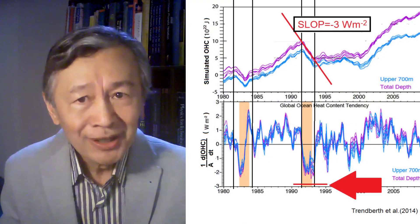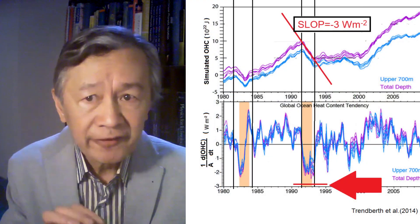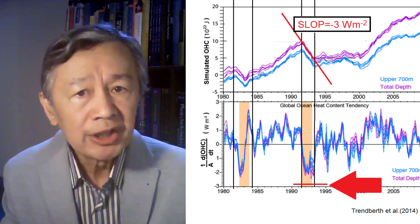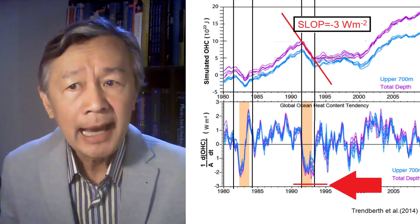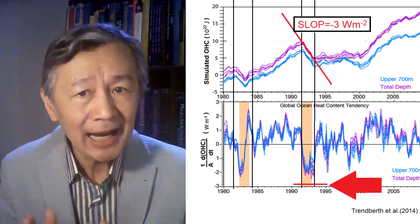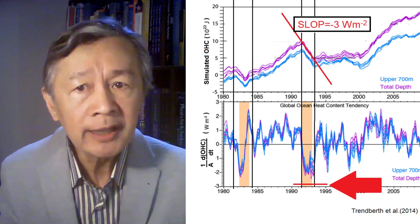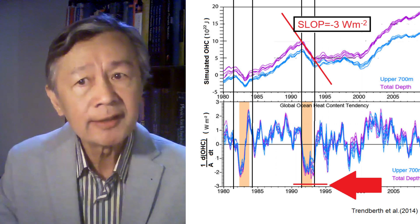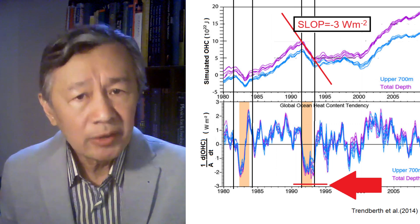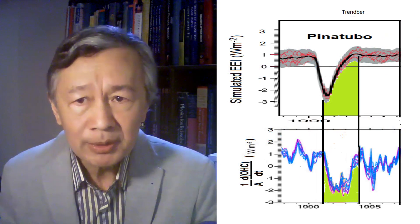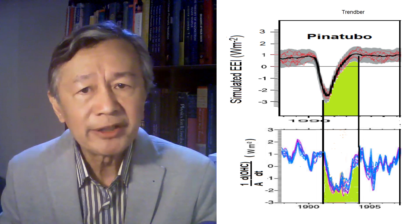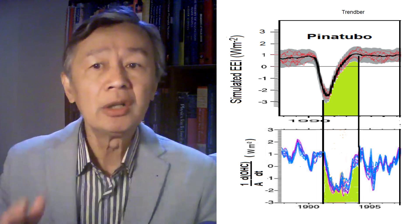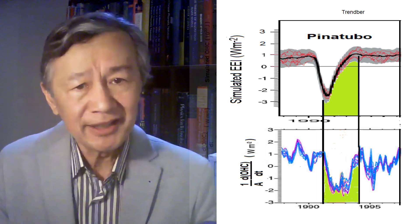For Pinatubo, the rate of OHC first dropped to a negative value, determined by the slope as shown in this diagram, and stayed for one and a half year before it oscillated around zero. By way of contrast, however, the dip for Pinatubo merely touched the negative 3 watt per meter square and immediately returned to the simulated mean EEI.